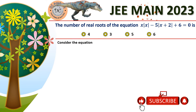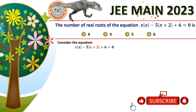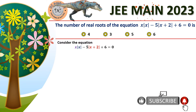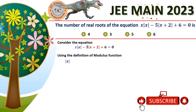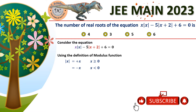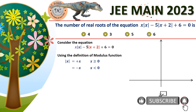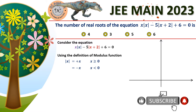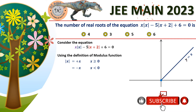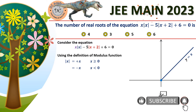The given equation involves two modulus functions: |x| and |x + 2|. By definition, |x| equals +x when x ≥ 0 and −x when x < 0. To sketch |x|, we draw a horizontal and vertical axis, mark the origin, and draw y = x for x ≥ 0 and y = −x for x < 0, which is perpendicular to y = x.